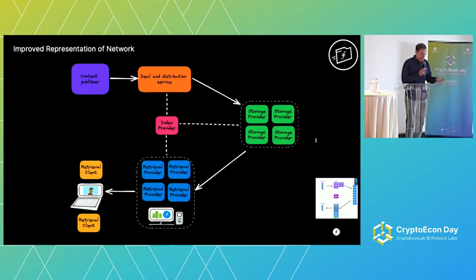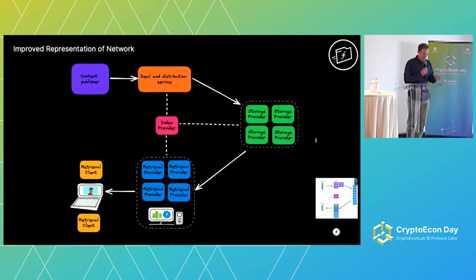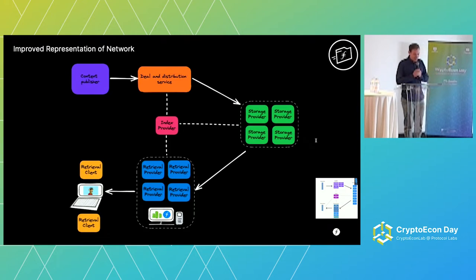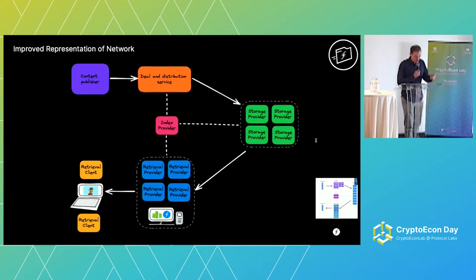They give their data to deal and distribution services such as Estuary, NFT.storage, sometimes called aggregation services, and some also fill mine. These aggregators store it in storage providers. The storage providers can also create indexes which will live in the index provider nodes — shown in red here. That's the storage flow of the network.